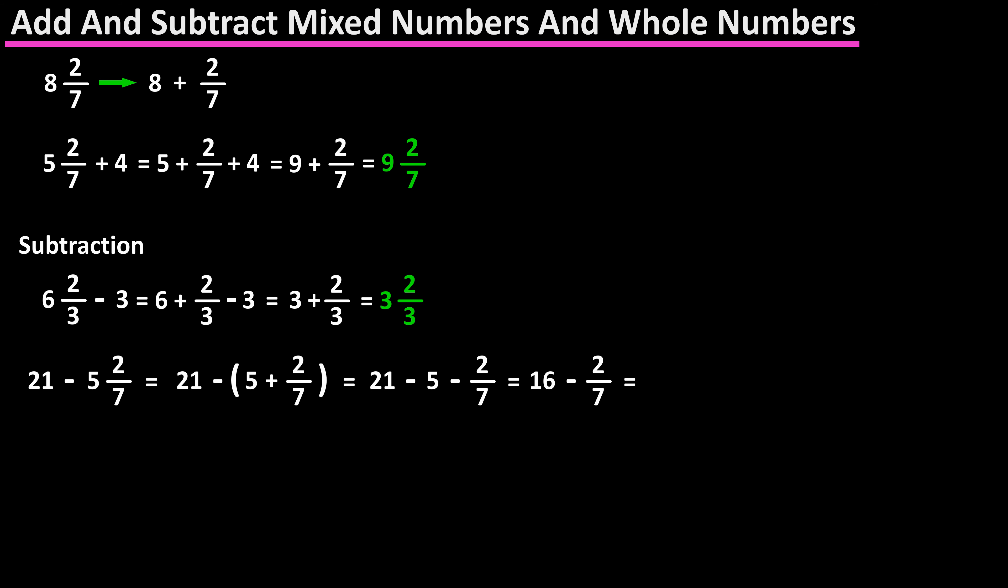In this case, we would borrow from the 16, which gives us 15 plus 1 minus 2 over 7. We can then convert that to 15 plus 7 over 7 minus 2 over 7, which gives us a final answer of 15 and 5 over 7.